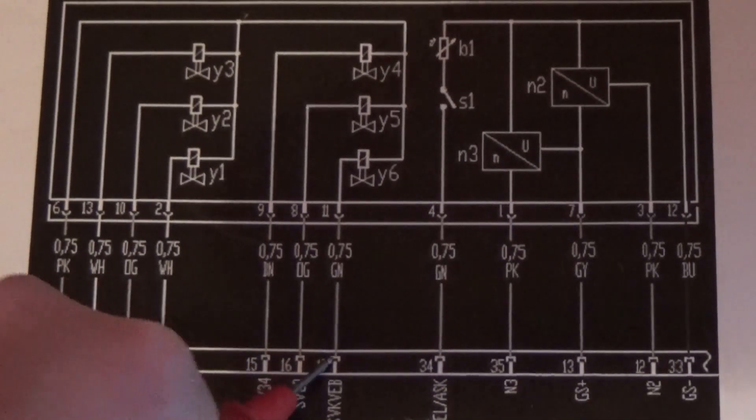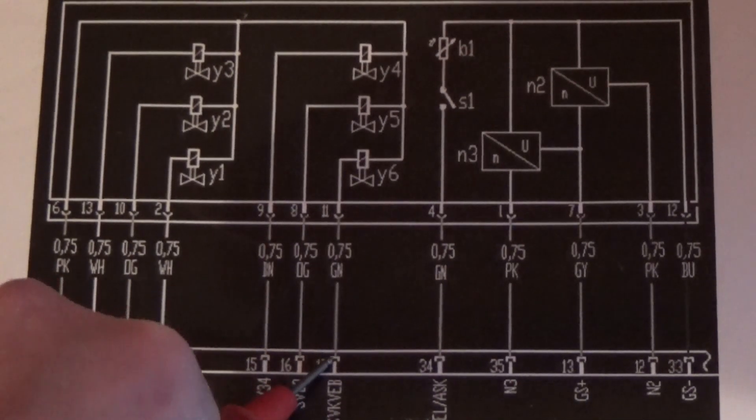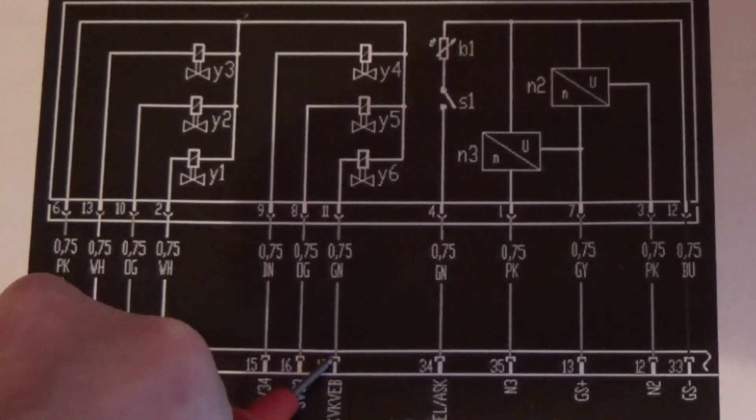Pin 17. Lock up clutch modulating solenoid. 2.7 ohms.